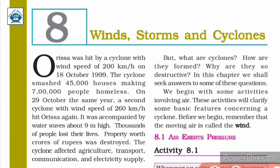The cyclone smashed 45,000 houses, making 7 lakh people homeless. On 29 October the same year, a second cyclone with wind speed of 260 km per hour hit Orissa again. It was accompanied by water waves about 9 m high. Thousands of people lost their lives and property worth crores of rupees was destroyed.